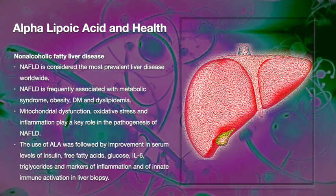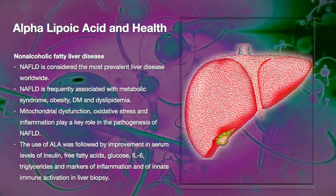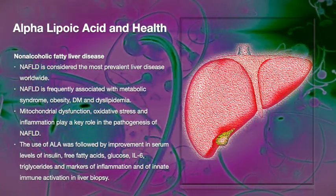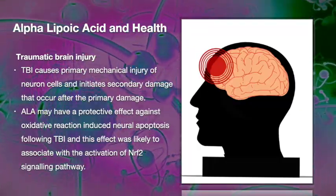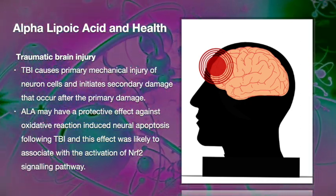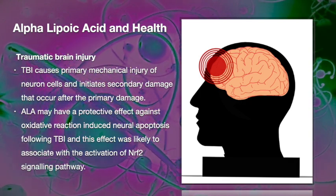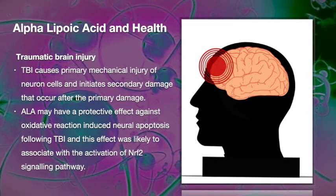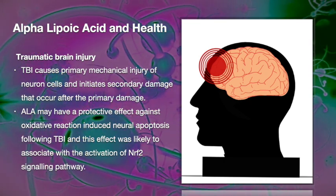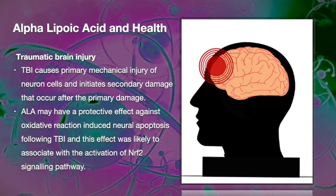The use of ALA was followed by improvement in serum levels of insulin, free fatty acids, glucose, IL-6, triglycerides, and markers of inflammation and innate immune activation in liver biopsy. Traumatic brain injury, or TBI, causes primary mechanical injury of neuronal cells and also initiates a secondary damage that occurs after the primary damage — a double impact. ALA may have a protective effect against oxidative reactions inducing neuronal apoptosis following TBI, likely due to activation of a factor called NRF2.